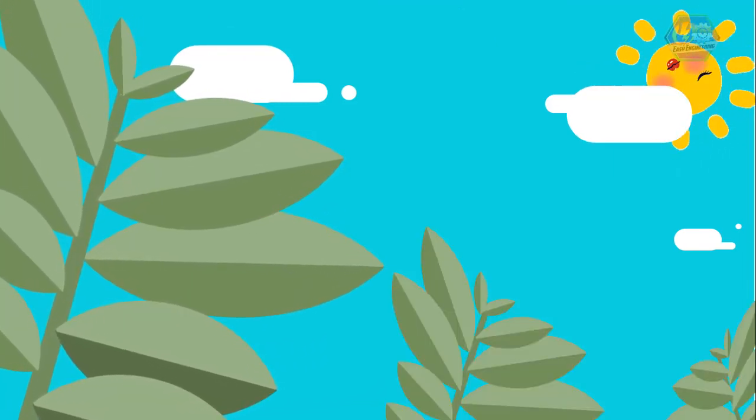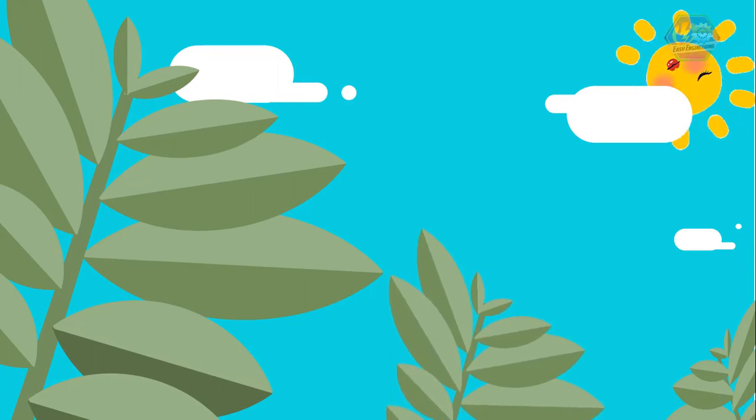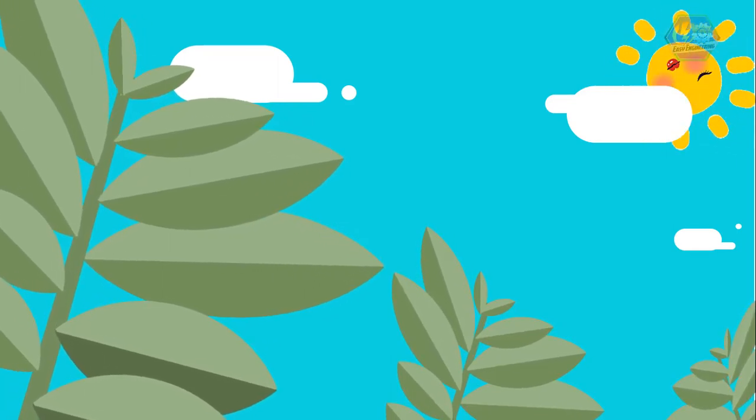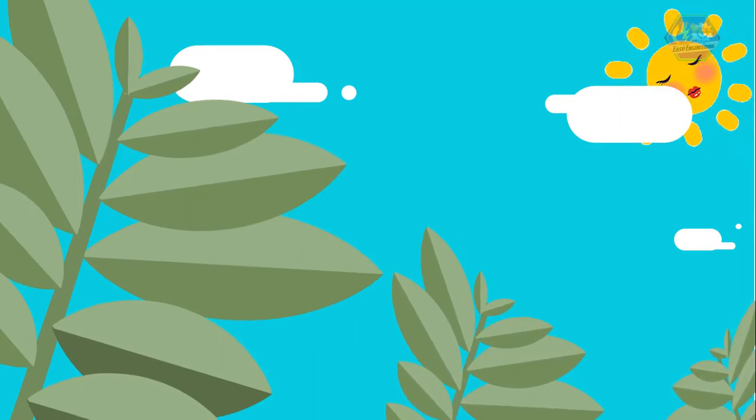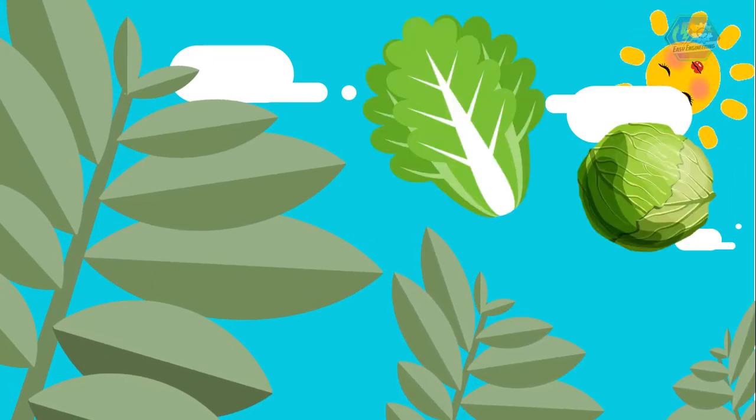Leaves absorb energy from sunlight as well as collect carbon dioxide from the air for the plant's own food. They have different shapes and sizes, but most of them are flat and green. Some examples of leaves we eat are cabbage and lettuce.